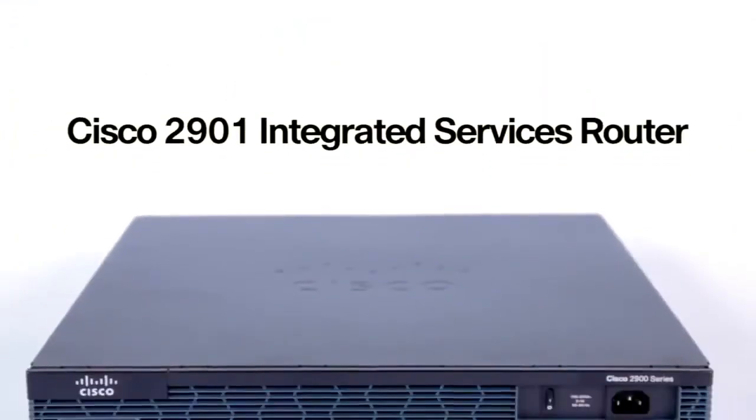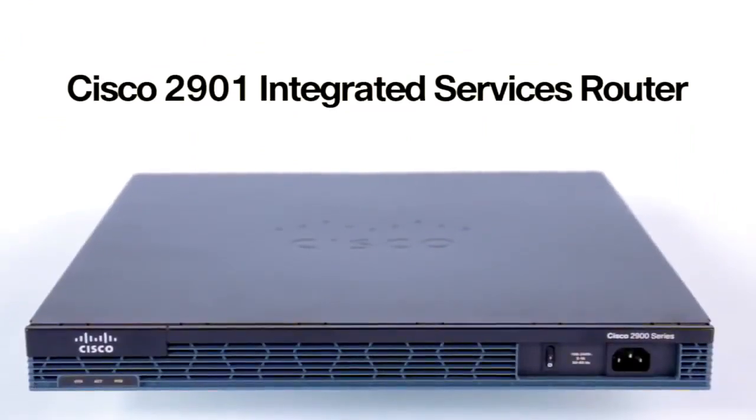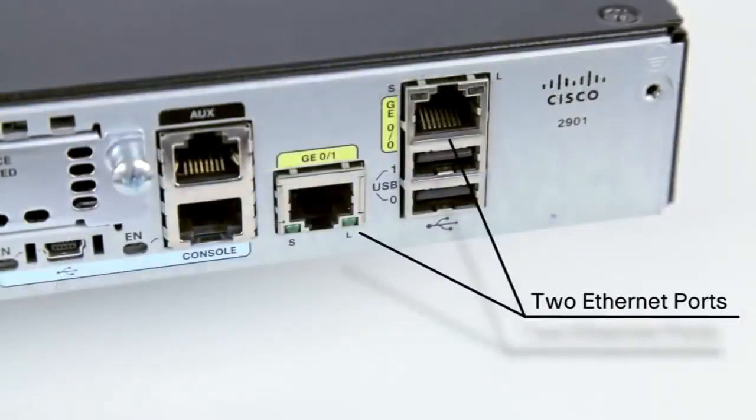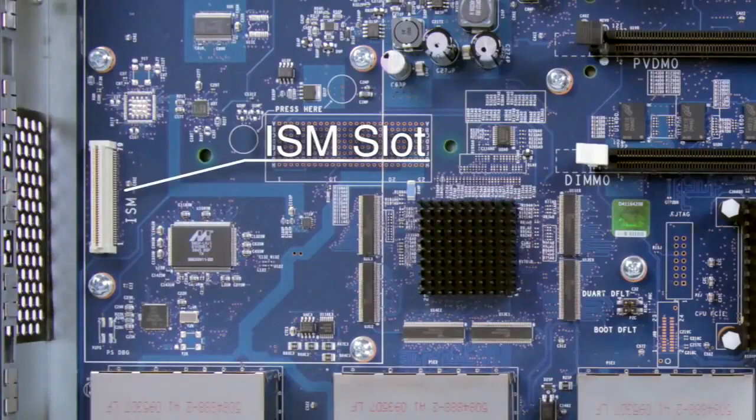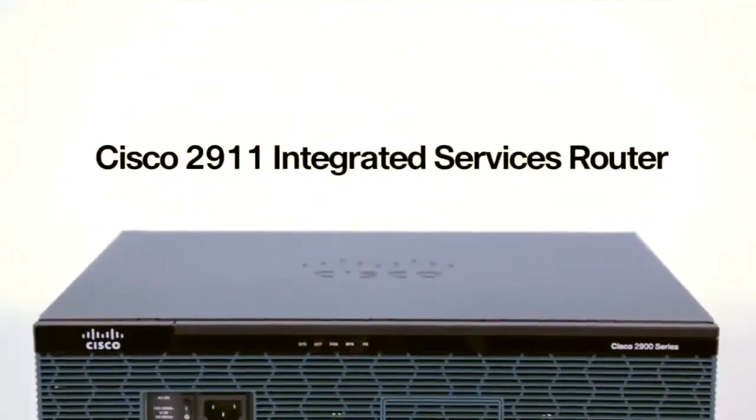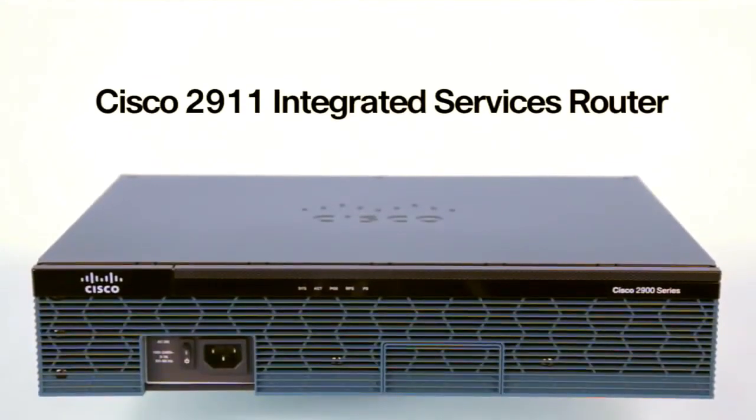Four models to choose from in this series. The 2901 is our entry-level model coming in at just one rack unit. This ISR has two onboard gigabit ethernet ports, two DSP slots for the PVDMs, one ISM slot, but no service module slot. For that, you need to go up one level to the 2911.